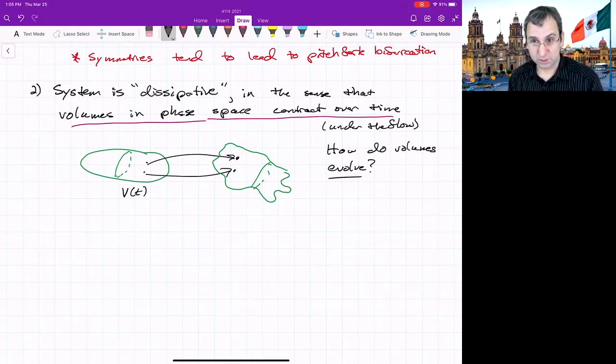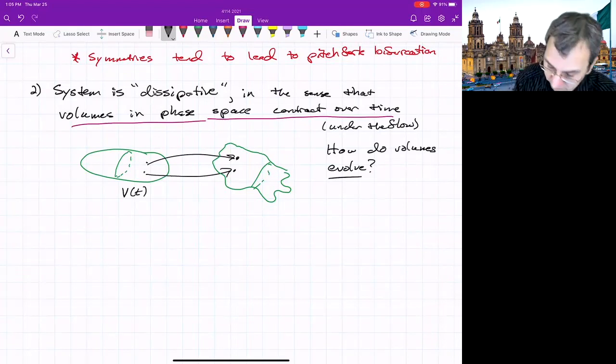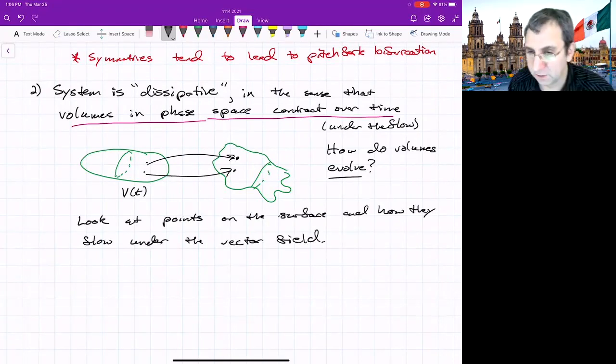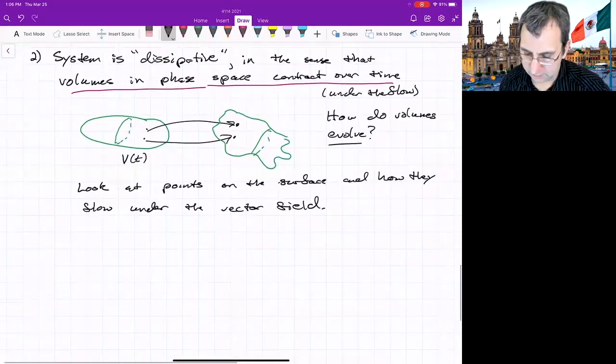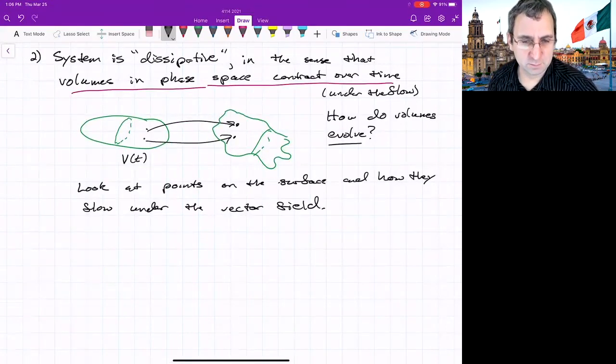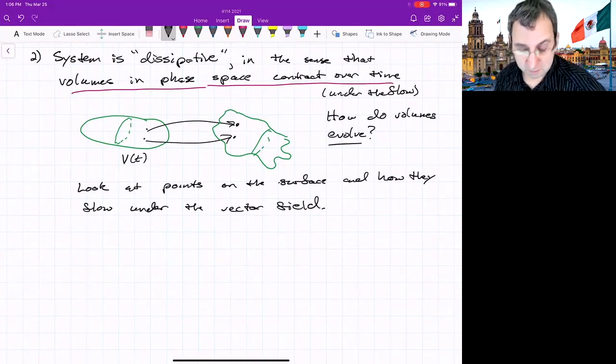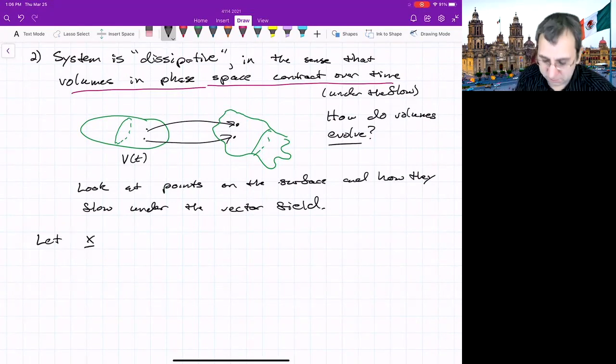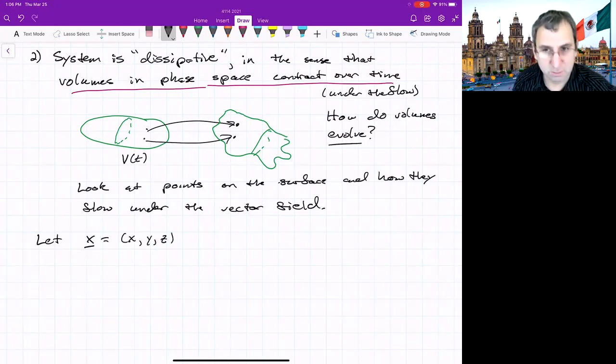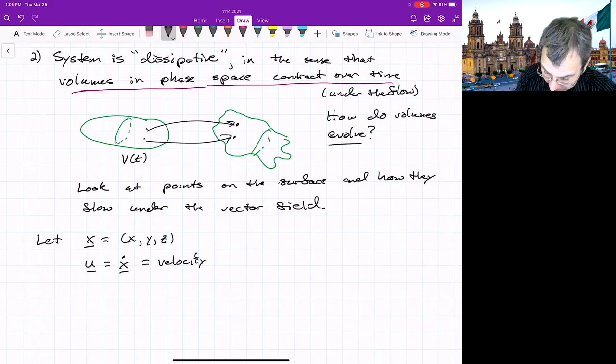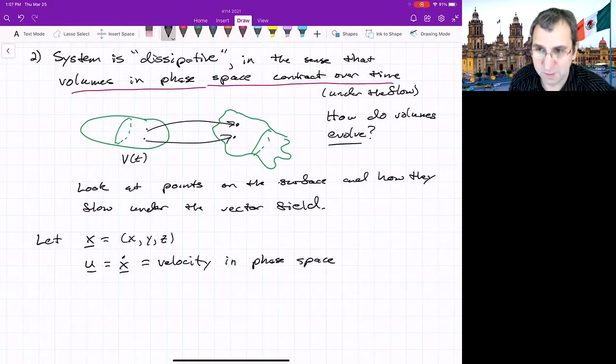So we're going to consider points on the surface and how they flow according to the vector field. So we're probably going to have to do some 3D vector calculus. It's useful at this point to think of the phase space as a fluid, and to use some ideas from fluid mechanics. We'll write positions as x with a line under it, so we know that means vector position. And then there'll be u, the fluid velocity vector. So this is the velocity in phase space. Not physical space, phase space.